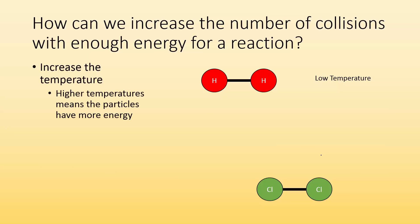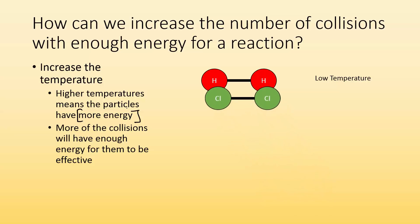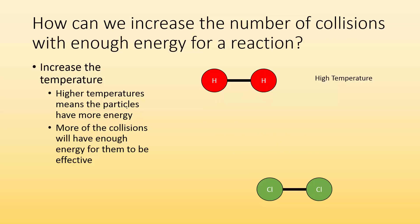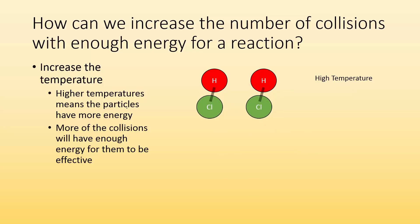Increasing the temperature also has another effect: it increases the number of collisions that have enough energy. If we raise the temperature, we give particles more energy, so more of those particles have enough energy for a collision to be effective. At low temperature, things move slowly — not enough energy for reaction. At high temperature, they move faster and have enough energy, so more collisions are effective.